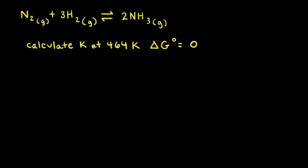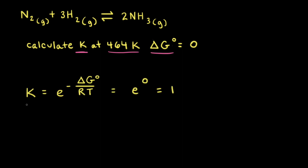For our last example, let's calculate K for the same reaction at 464 Kelvin. At that temperature, delta G naught for this reaction is equal to zero. Calculating K is a lot easier here: plugging in zero for delta G naught gives K equals E to the zero power, which equals one. When the equilibrium constant equals one, there are significant amounts of both reactants and products at equilibrium — significant amounts of both nitrogen and hydrogen, and ammonia.